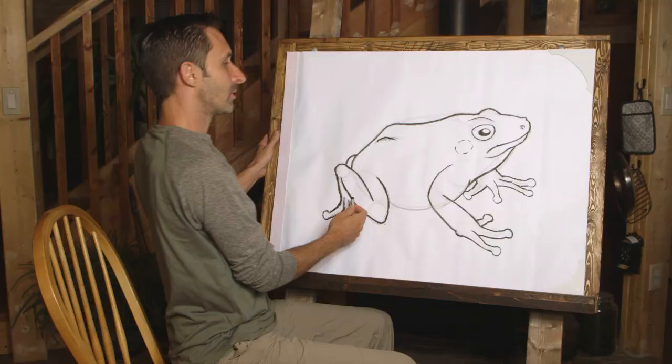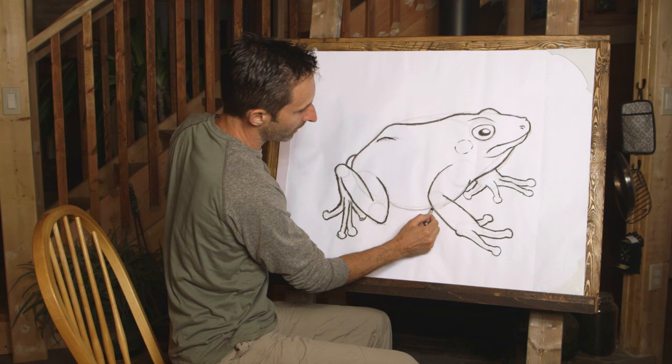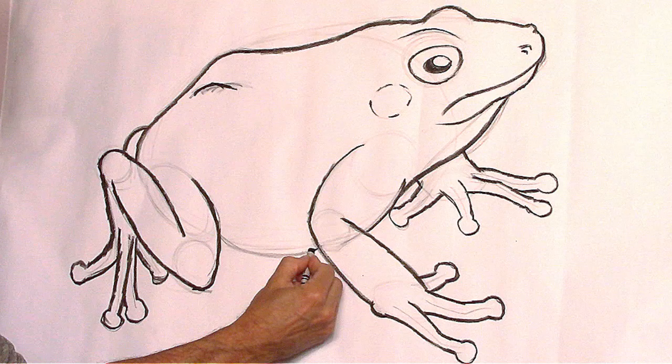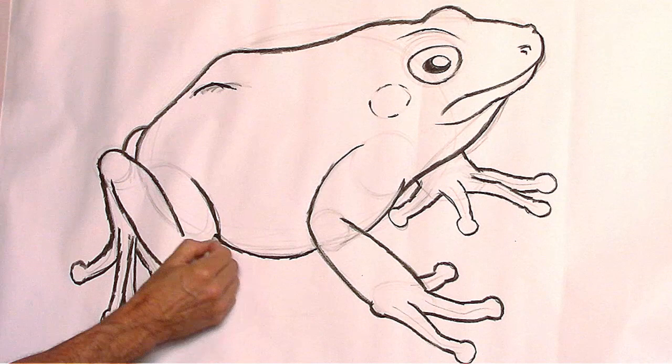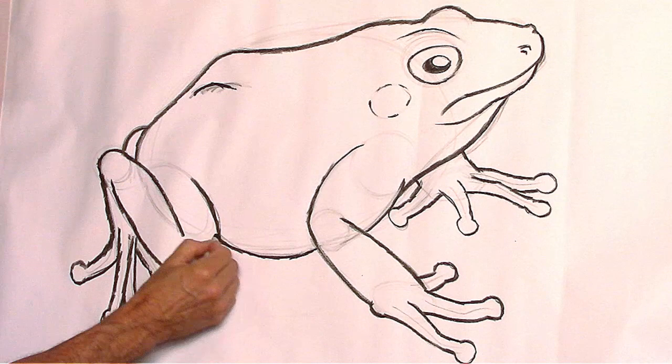Now we're all set with the black for a while — except for the belly. This chubby little frog needs a chubby little belly, so let's note that. There we go. Now let's go to color for a little bit.